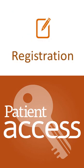Before you can begin to use Patient Access on your Android device, you'll need to request online access from your GP practice. When you do this, you may be asked to provide identification before you're given online services account details — in other words, the codes required to register for patient online. You'll then need to install the Patient Access app on your device. The application is free and can be found on the Google Play Store.